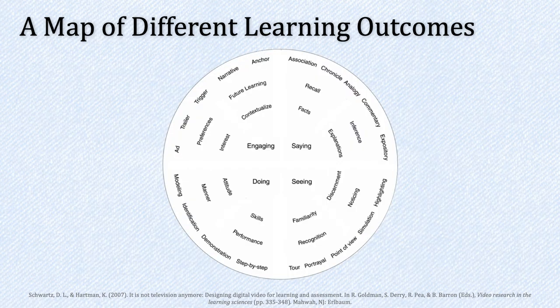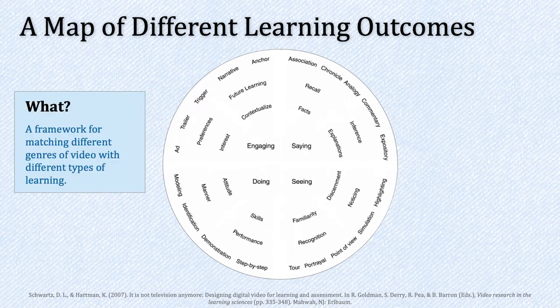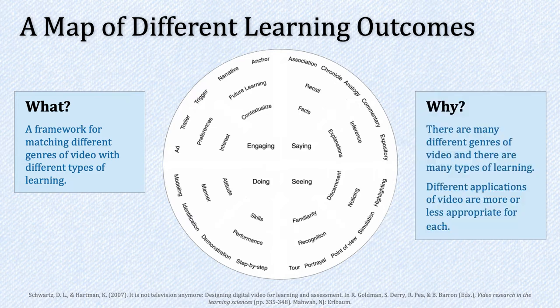To help educators use video more effectively, Schwartz and Hartman developed a map of different learning outcomes — really a framework for matching different genres of video with different types of learning. They acknowledged that there are many different types of video and many different types of learning, and that different applications of video are more or less appropriate for each type of learning. They wanted to provide structure to help us make more educated decisions about what genre of video to use when trying to achieve a certain learning outcome.